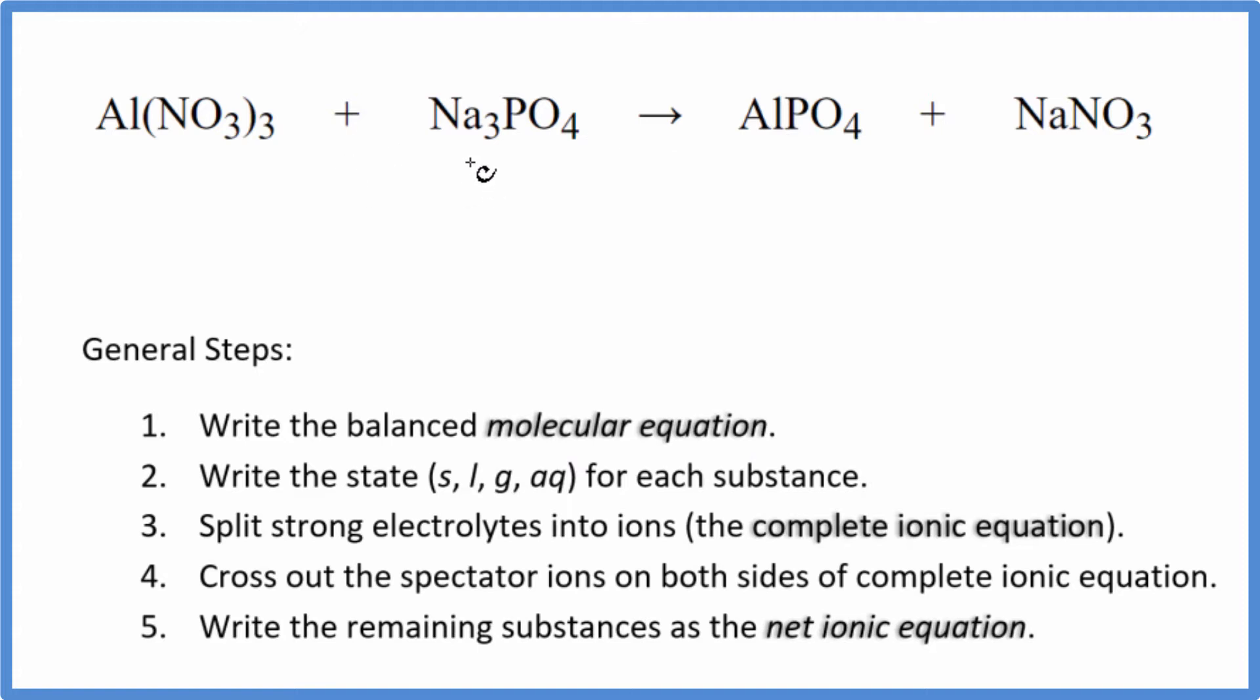I can see right away that I have three sodium atoms here and just one here. So I'm going to put a three in front of the sodium nitrate here, balances the sodiums. I have three nitrates, and over here I have three nitrates, so that's good. I have one aluminum, one aluminum, and then one phosphate, one phosphate group. So this is the balanced molecular equation.